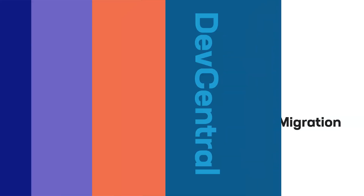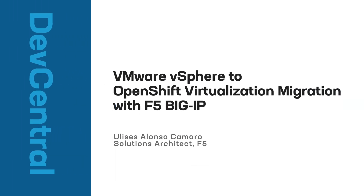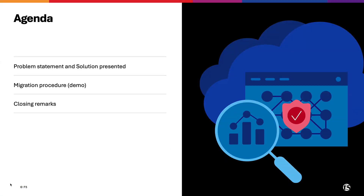Welcome to this VMware vSphere to OpenShift Virtualization Migration with F5 VIP. This is a 5-minute demo to give an overview of the solution. We start with a one-slide problem statement to jump straight into the demo, then a one-slide conclusion remarks.